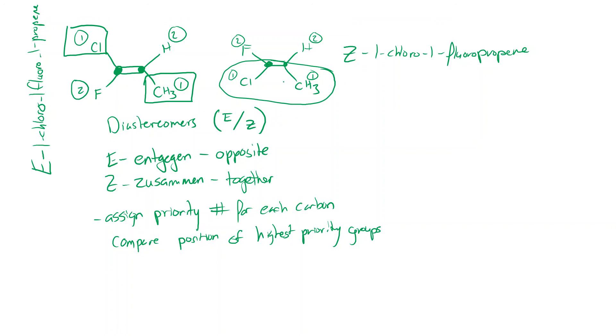So the important thing is that you only assign the priority numbers attached to each carbon. So this carbon, we assign a one and a two to that. And then we forget those numbers and start over with this carbon over here, assign a one and a two over there. Because even though fluorine is a higher atomic number than carbon, we're not comparing the carbon to fluorine, we're comparing the carbon to the hydrogen over here. So this gets the higher priority number. So chlorine is the highest priority on this side. Methyl group is the highest priority on this side. And then we describe their relationship. So in this case, it's E. In this case, it's Z.